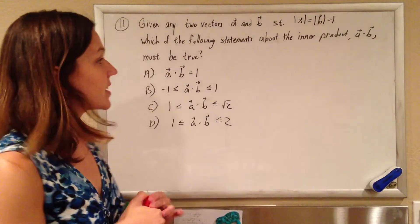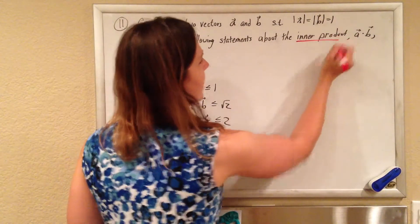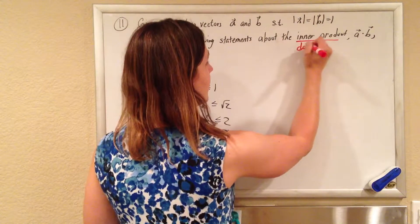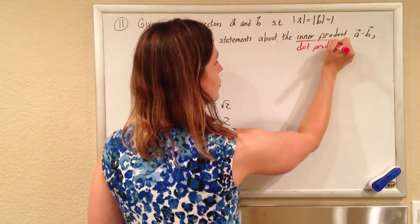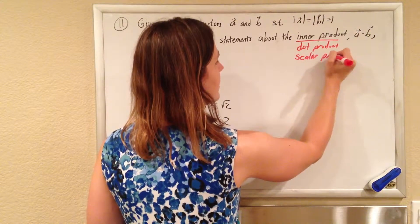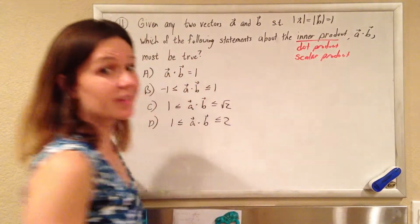Okay, so this one is asking about the inner product, and there's a ton of names for the inner product. You usually hear it as dot product, and they do write it as dot product A dot B there, and you also see it as scalar product, all synonymous.